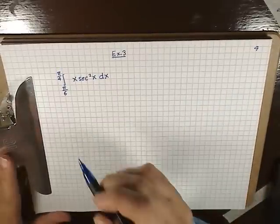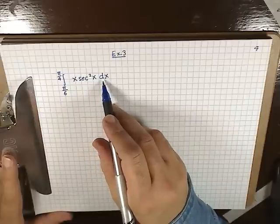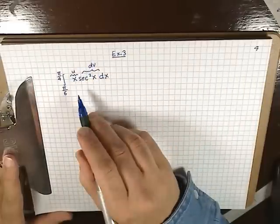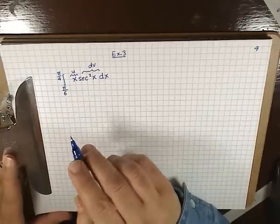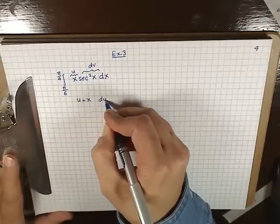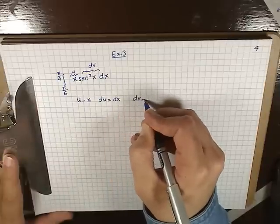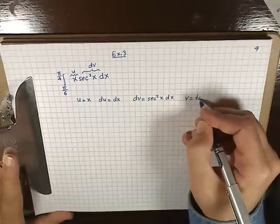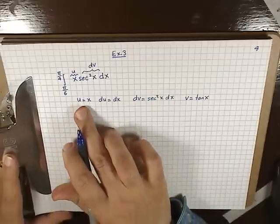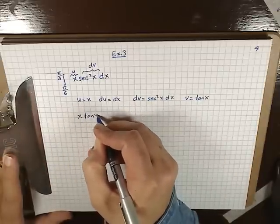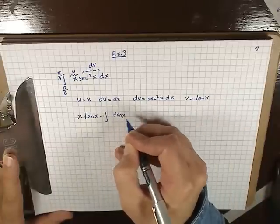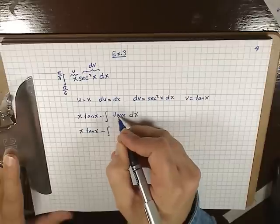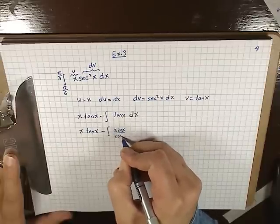Let's do another example. Here we have the integral from π/6 to π/4 of x sec²(x) dx. We'll let u equal x and dv equal sec²(x) dx, because x is easy to differentiate and sec²(x) is easy to integrate. So u equals x, du equals dx, dv equals sec²(x) dx, and integrating gives v equals tan x. Applying the formula, we get x tan x minus the integral of tan x dx. We rewrite tan x as sin x over cos x dx.